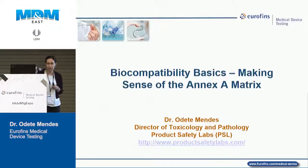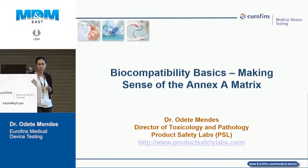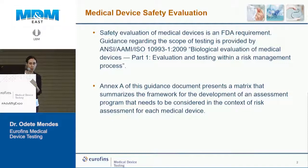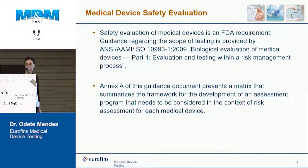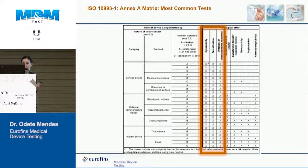Today I'm going to talk about the tests done according to Annex A of ISO guideline 10993 to test biocompatibility safety of medical devices. The safety evaluation of medical devices is required by the FDA and worldwide agencies. ISO 10993 describes the processes for biological evaluation of medical devices, and Annex A has a matrix that tells you, for the type of device you have, what tests you should be doing or considering.